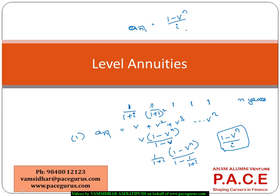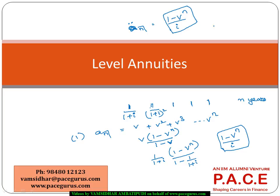A few quick additions: knowing this formula, a lot of questions can be handled quickly. The key result to remember is that the present value of a regular annuity equals (1 - v^n) / i.